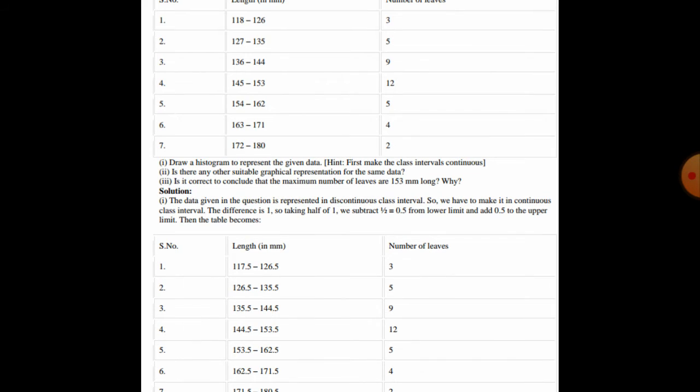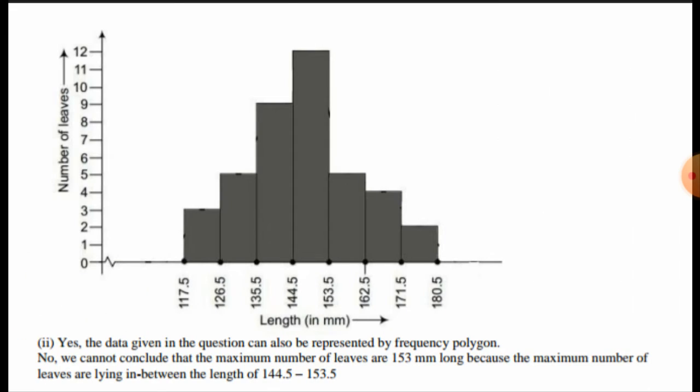In the second part, we are asked whether there is any other suitable graphical representation for this data. Yes, the data can also be represented by a frequency polygon. However, we cannot conclude that the maximum number of leaves are 153 mm long, because the maximum number of leaves lie in the interval 144.5 to 153.5.